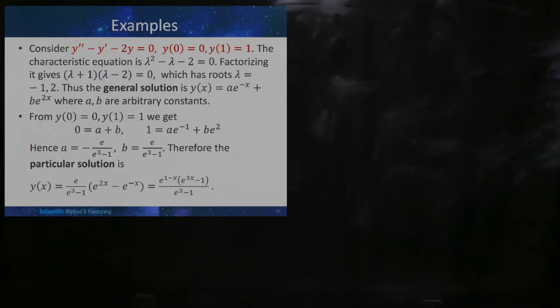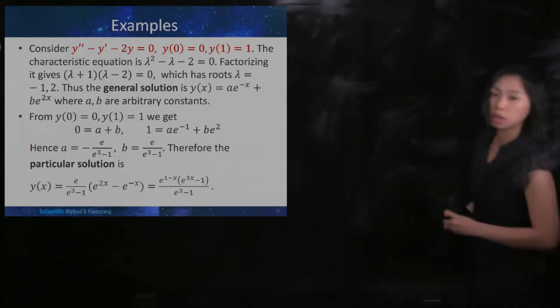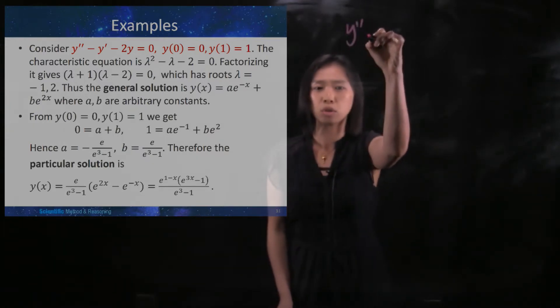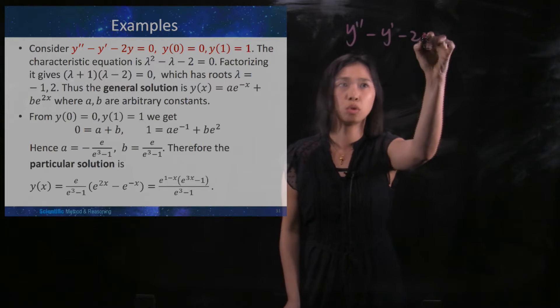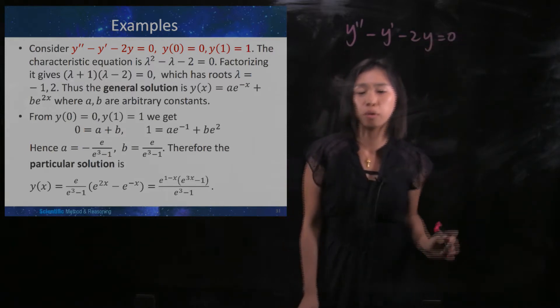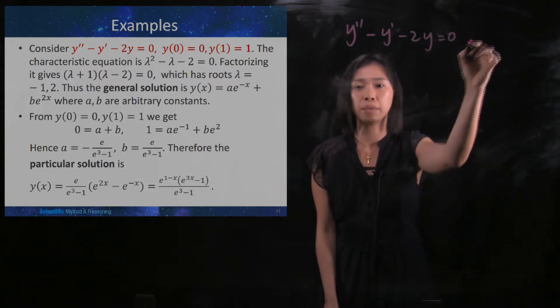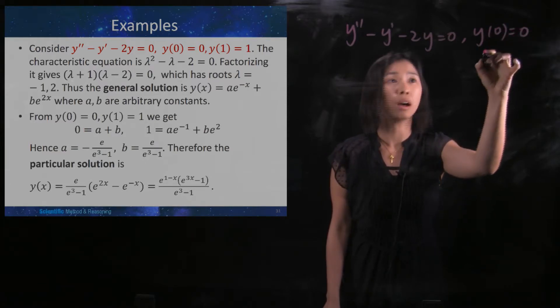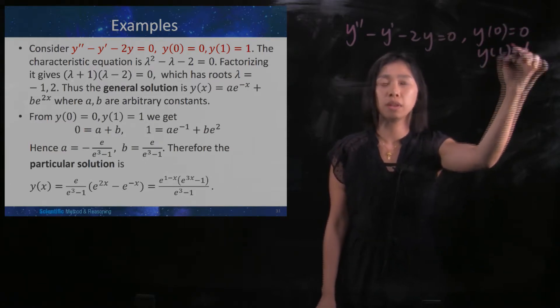We will now go through the final example in this chapter. So we consider y'' - y' - 2y = 0 with two initial conditions: y(0) = 0 and y(1) = 1.